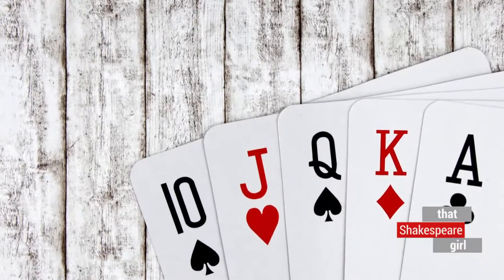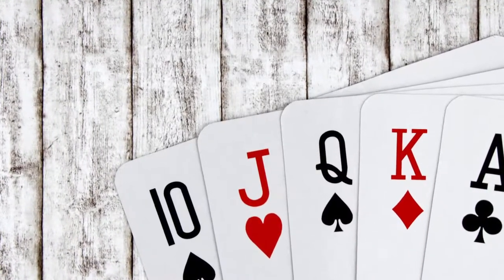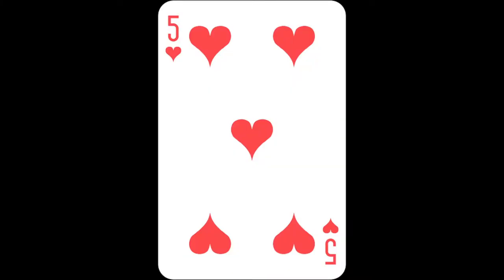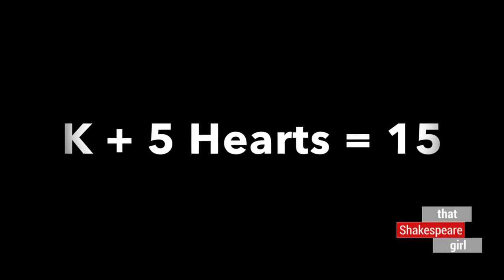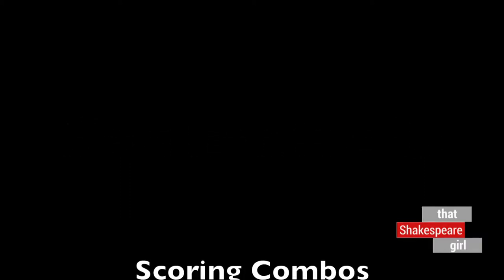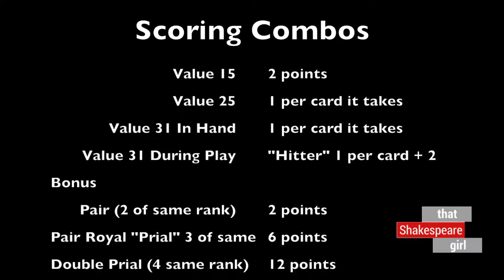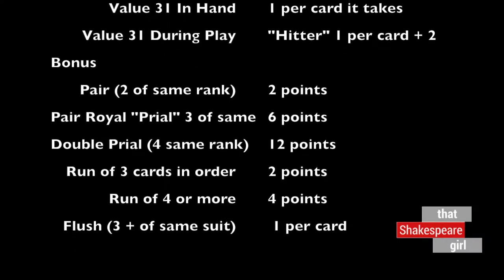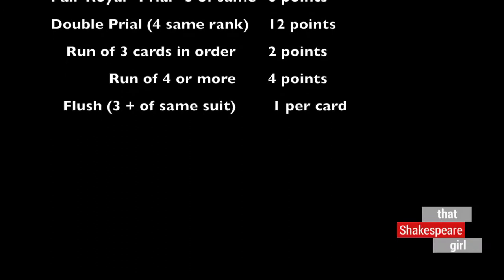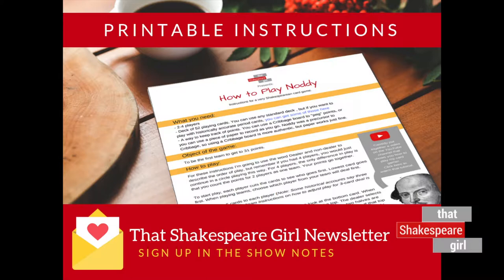When counting up the cards in your hand, you look at their value. So if you're holding a king and a five of hearts, you have a card value of 15. Certain numbers count for points in Noddy: if the cards you're holding can add up to 15, 25, or 31, you get points. You also get points for holding pairs, sequences, runs of three, runs of four, and runs of five or more. You can pause the video to write down these instructions, or sign up for the Shakespeare Girl newsletter for a free ebook guide including the scoring combinations — find the link below this video.